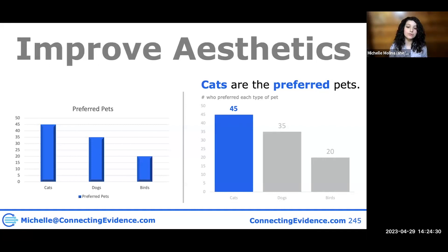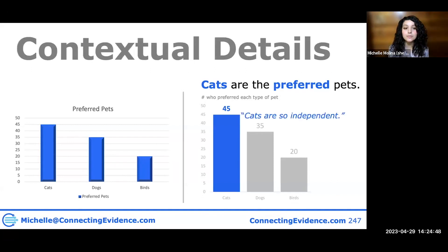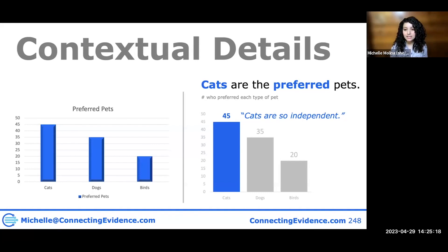Now I'm just improving the aesthetic — increasing the bar width a little bit, and putting things on the left-hand side because we read from left to right in the United States. And whenever possible, if you have qualitative data tied to your quantitative data, make sure to include it, especially if it provides further context. For example, I'm including a quote: 'Cats are still independent' — something one of my survey participants shared. I'm also adding more white space, and making sure this number and this quote are aligned so that people think of them as related to each other, using proximity.